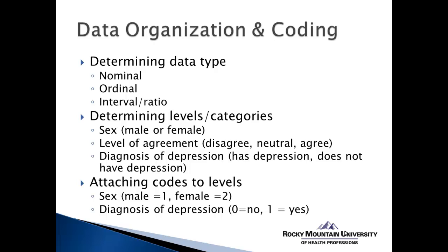We'll talk a little bit later about how we can convert interval or ratio scale data to be used in non-parametric testing. Once we've determined the levels and categories of our variables, we need to determine a code for each level, and that code is what's going to be entered into SPSS. For example, for sex, we would assign male a code of one and female a code of two. For diagnosis of depression, we could assign no depression a code of zero and having depression a code of one. The numbers don't really matter because they don't have inherent value — we're just using them as codes to differentiate the two categories.